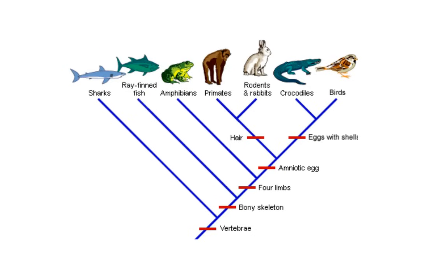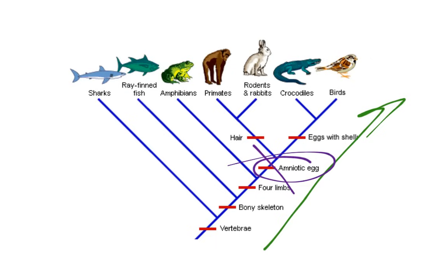As we go up the cladogram, we're going to get more and more exclusive with each trait. For example, right here the next trait is amniotic eggs. All the organisms from this point forward will have amniotic eggs, and all of the organisms from this point backward will not.